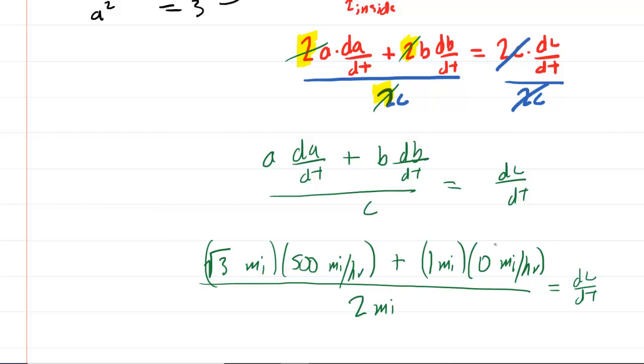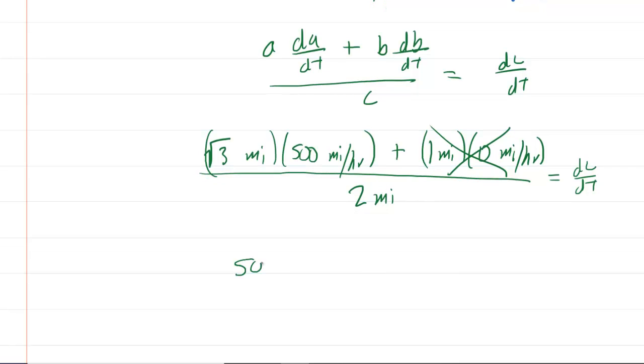Of course this term in the top right corner cancels out. We are left with 500 root 3 divided by 2. If we look carefully, in the numerator when we multiply these units together, we are going to have miles squared per hour.